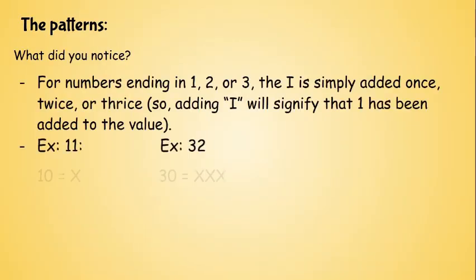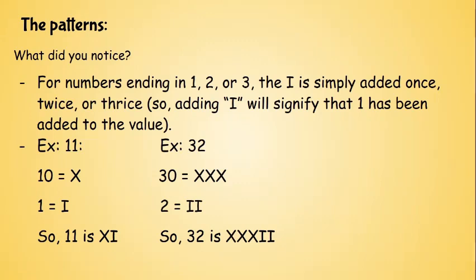So let's look at the examples. So for 11, it is 10 is X and 1 is I. So 11 is X plus I. So XI. 32 is 30 is 3 X's and 2 is 2 I's. So 32 is 3 X and 2 I or XXXII.